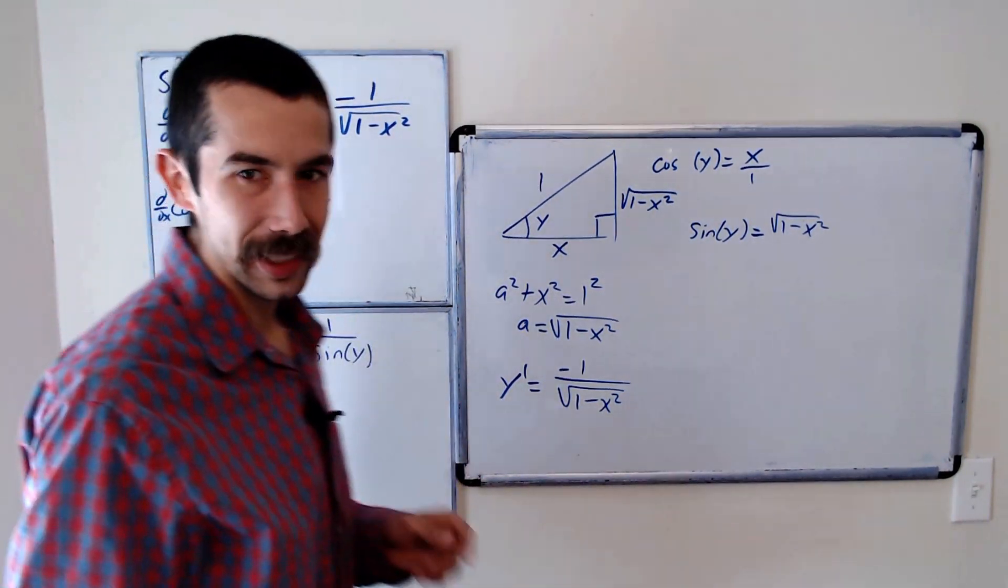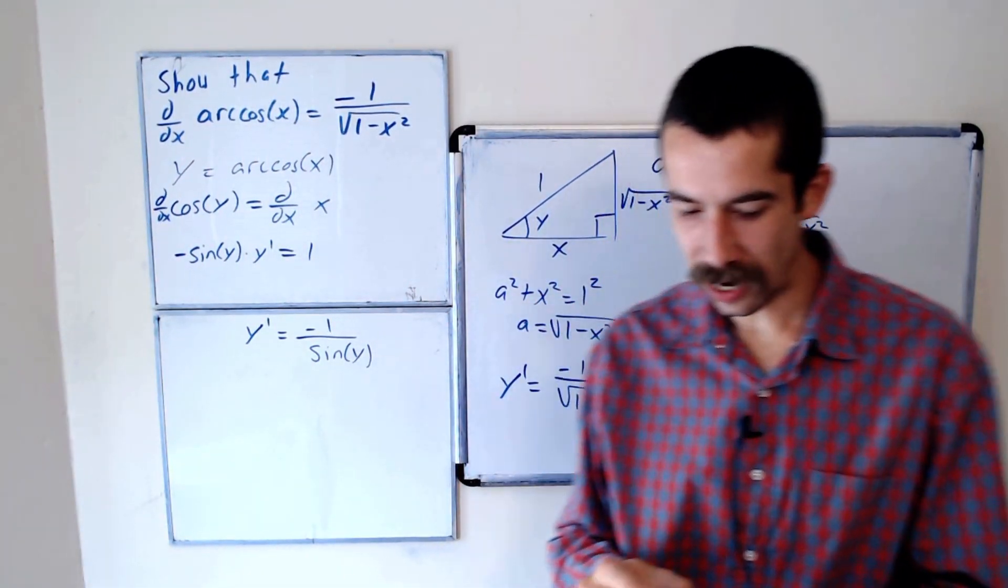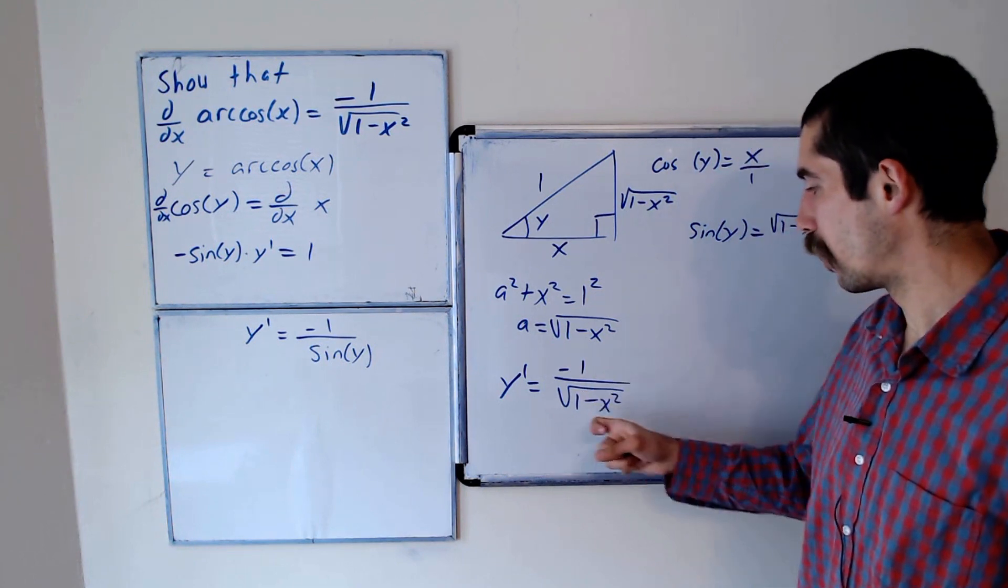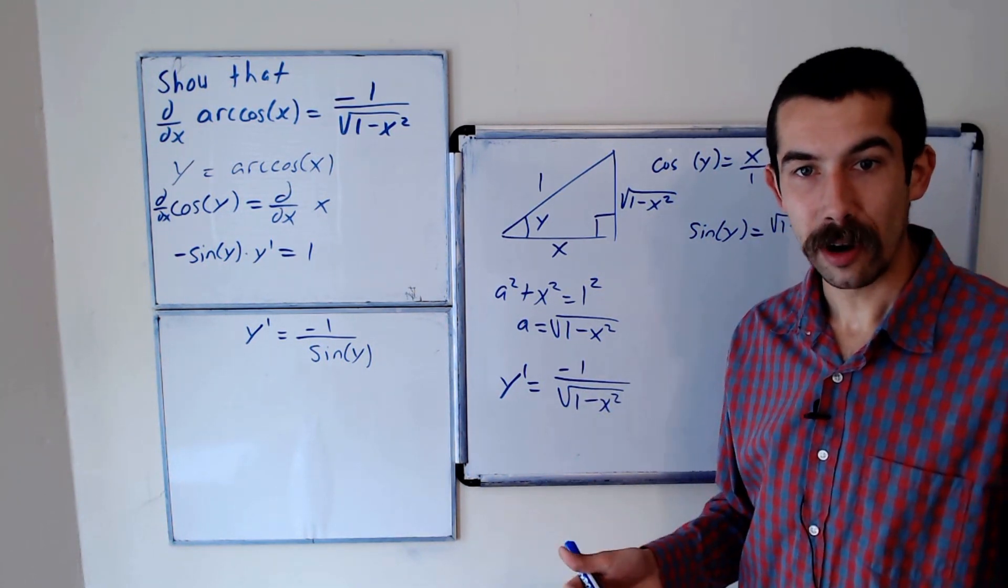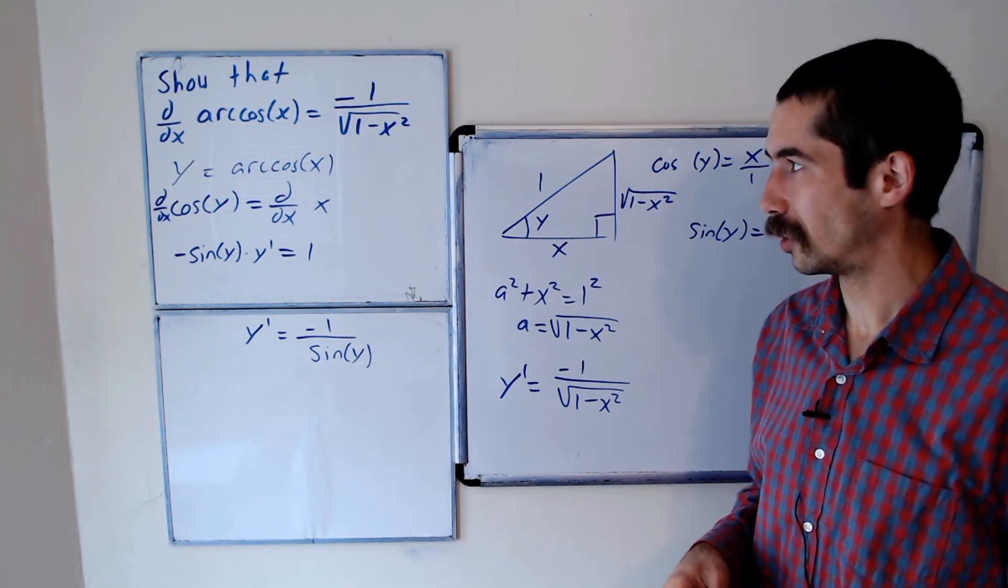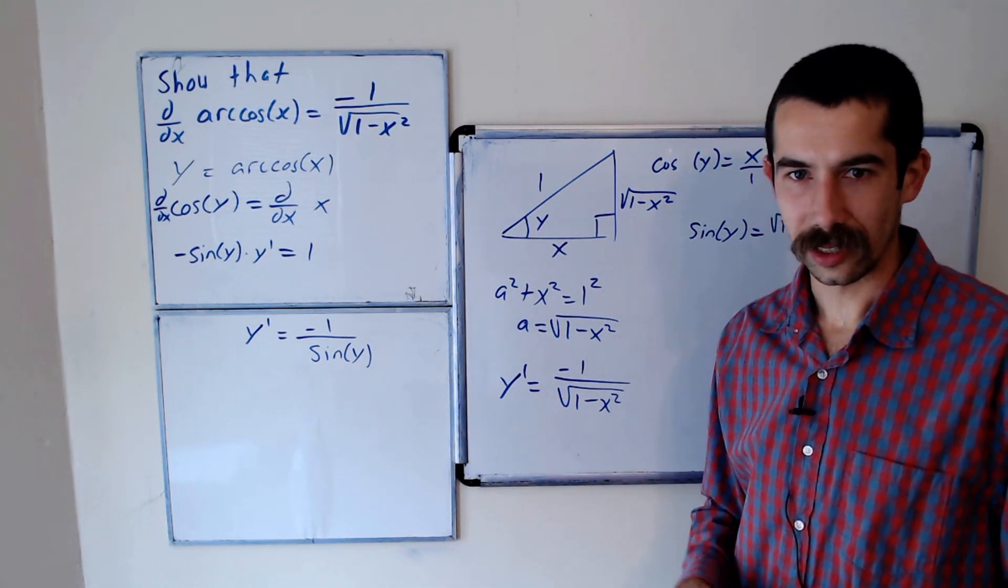So there you have it. That's why the derivative of arc cosine of x is equal to negative 1 over the square root of 1 minus x squared. And you could do a similar thing with all the other inverse trig functions. Arc sine, arc tangent, and so forth.